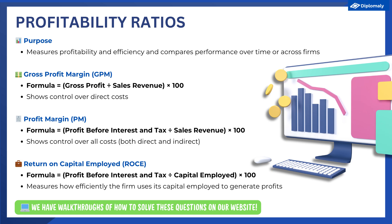The formula is gross profit divided by sales revenue times 100. This is expressed as a percentage. Remember the multiply by 100 means it is expressed as a percentage — do not forget the percentage sign on your test or exam, as that will result in a lost mark.